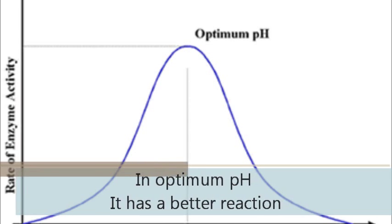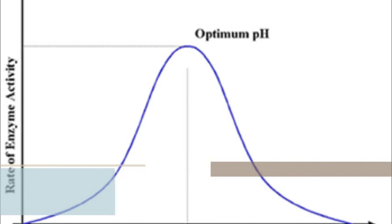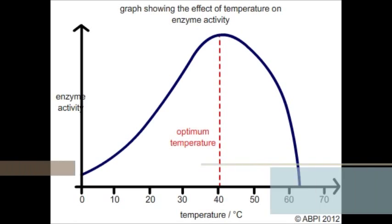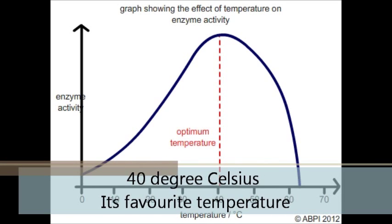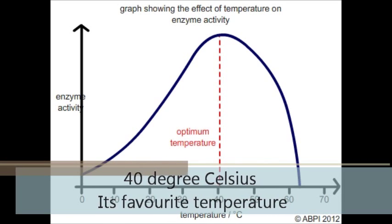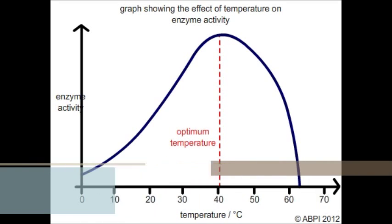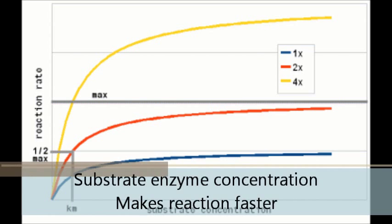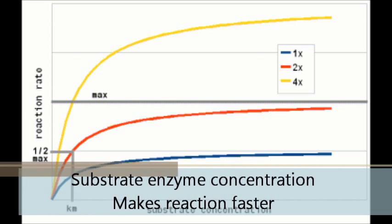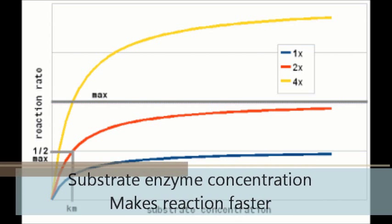Enzymes work best at around 40 degrees Celsius — that is their optimal temperature. Substrate concentration and enzyme concentration affect the rate of reaction.